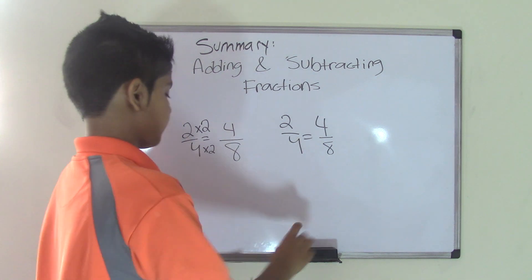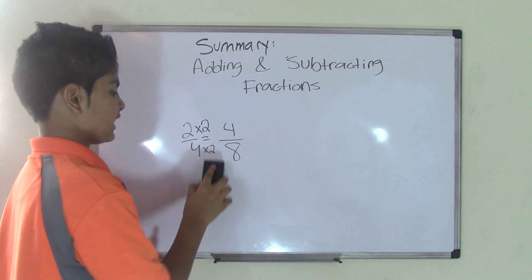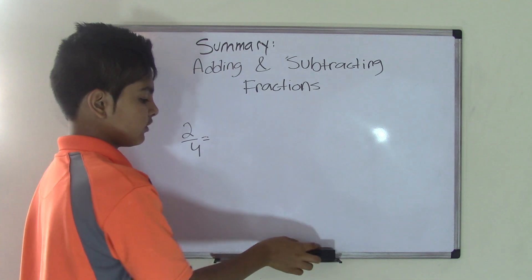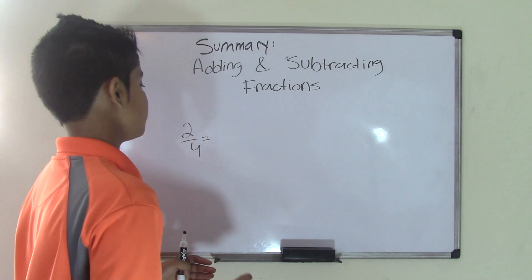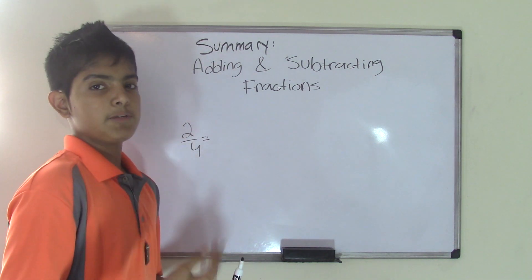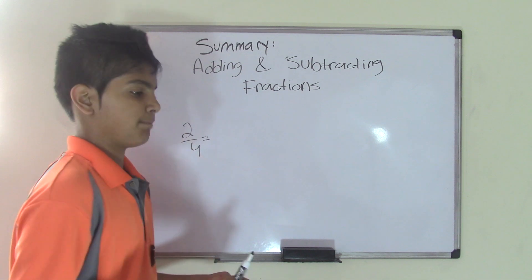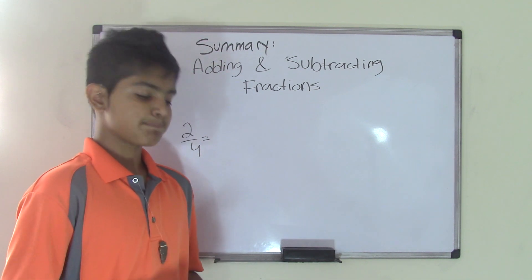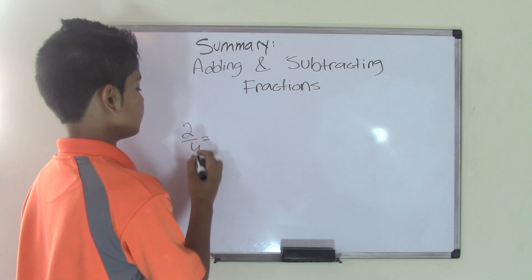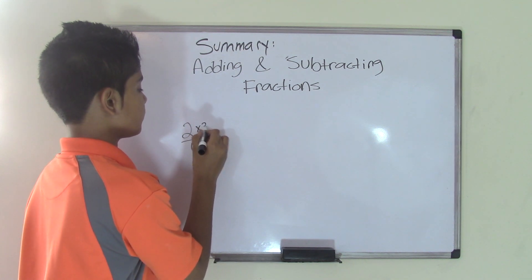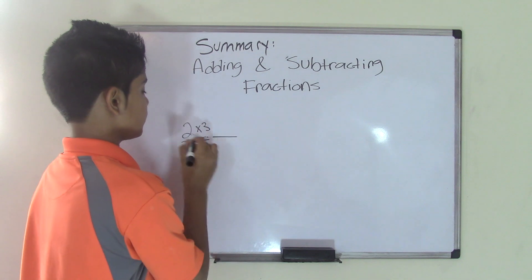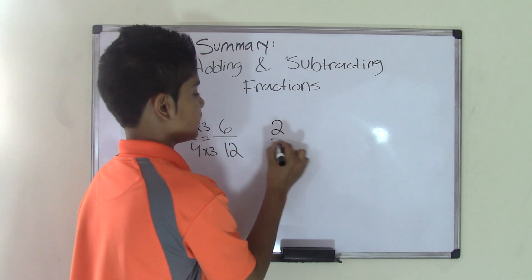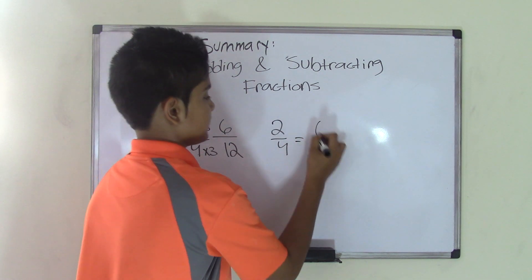There are actually a lot of equivalent fractions for one fraction — there isn't only one. It depends on the number you multiply the numerator and denominator by. The higher the number, the higher the equivalent fraction will be. No matter how different they look, they are equivalent. So let's also multiply two-fourths by three: two times three is six, and four times three is twelve. Another equivalent fraction for two-fourths is six-twelfths.